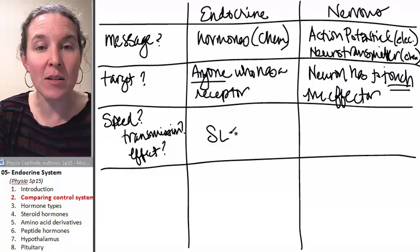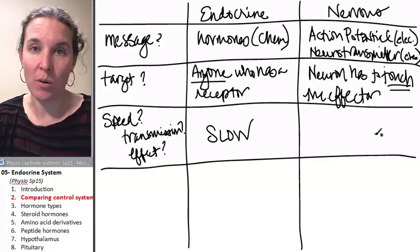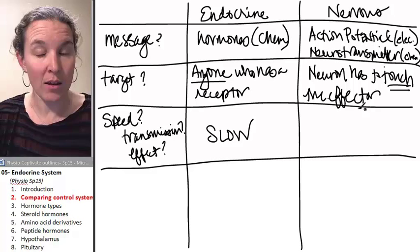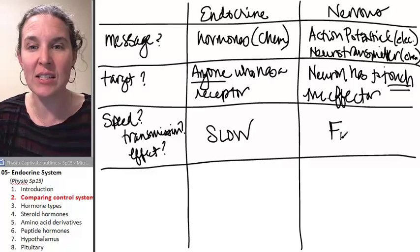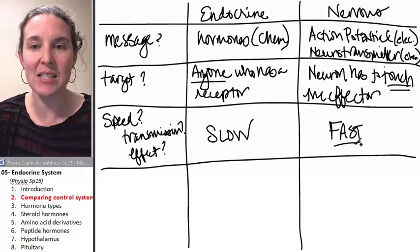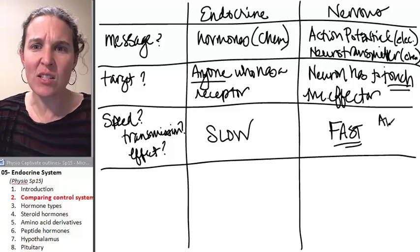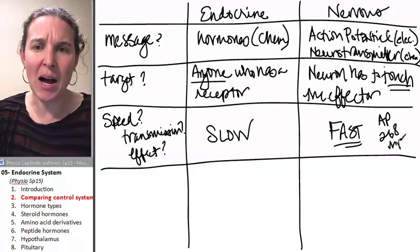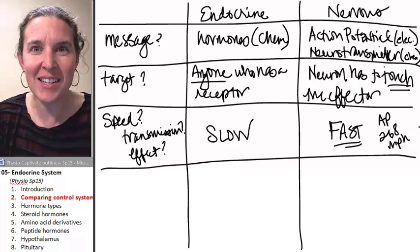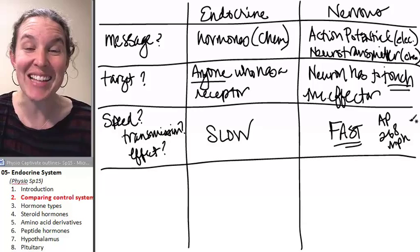The endocrine system is slow. We love it anyway, but it's slow. Nervous system, wholly fast. You know that action potential that we were talking about? This is crazy talk. 268 miles per hour? That's crazy fast.